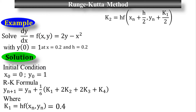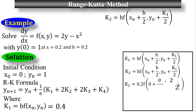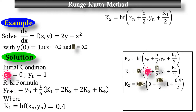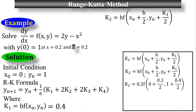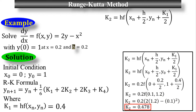The formula of k₂ is h times f(x_n plus h/2, y_n plus k₁/2). Substituting h equals 0.2, x_n equals 0, y_n equals 1, and k₁ equals 0.4, this gives 0.2 times f(0.1, 1.2). Since f(x, y) equals 2y minus x squared, with y equals 1.2 and x equals 0.1, the final value for k₂ is 0.478.